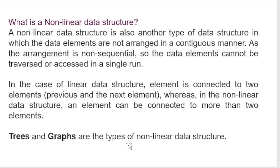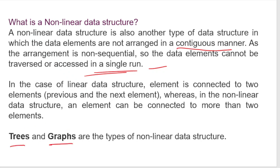What is a non-linear data structure? A non-linear data structure is one in which the data elements are not arranged in a contiguous manner — they are not continuous in memory. As the arrangement is non-sequential, the data elements cannot be traversed or accessed in a single run. In a linear data structure, an element is connected to two elements — previous and next — whereas in a non-linear data structure, an element can be connected to two or more elements. Examples are tree and graph.